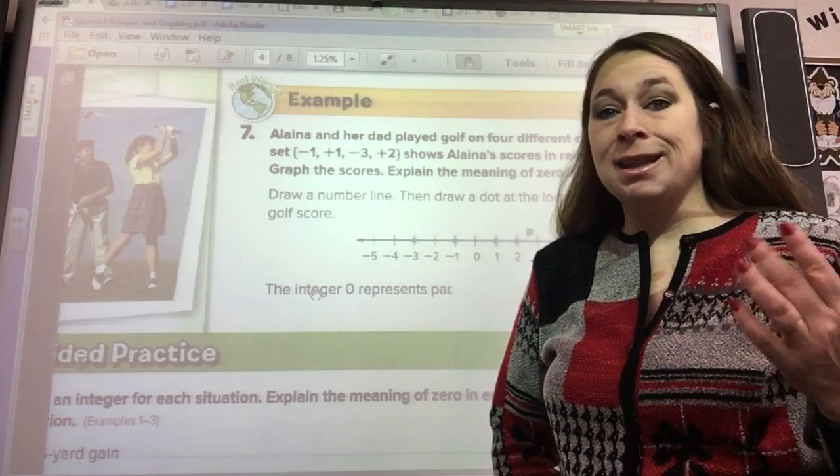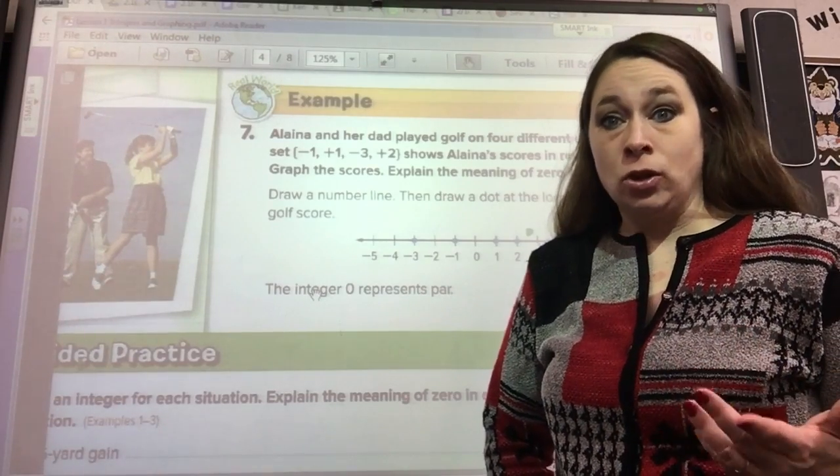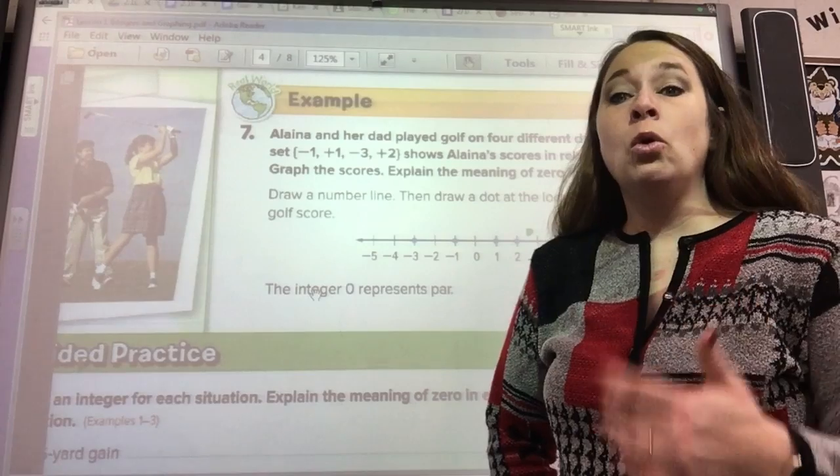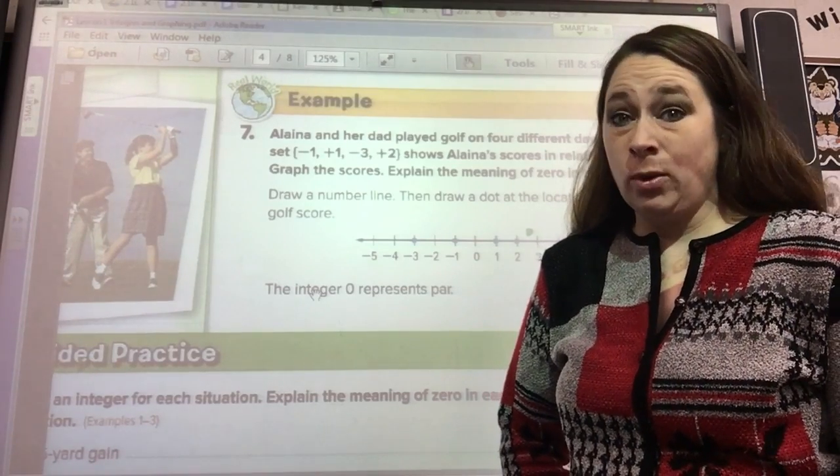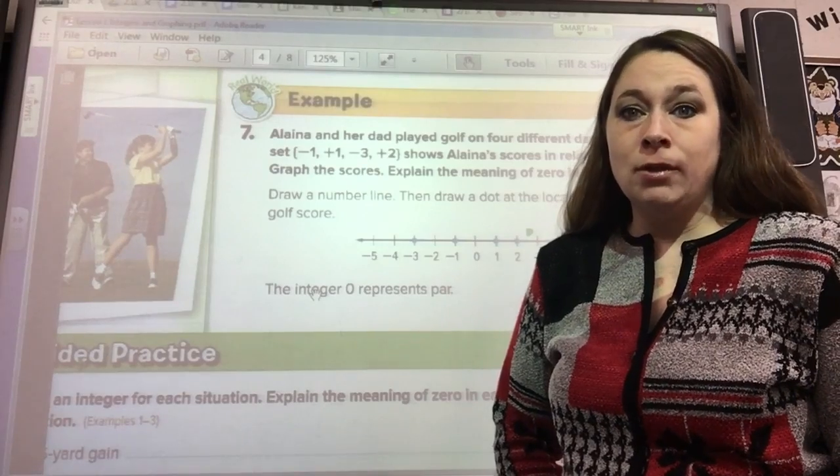If you make it in less than that, it's actually a negative number and that's a good thing in golf. If you go over four shots, then everyone after that is a plus number and you don't want that. So actually in golf, negative numbers are a really good thing.